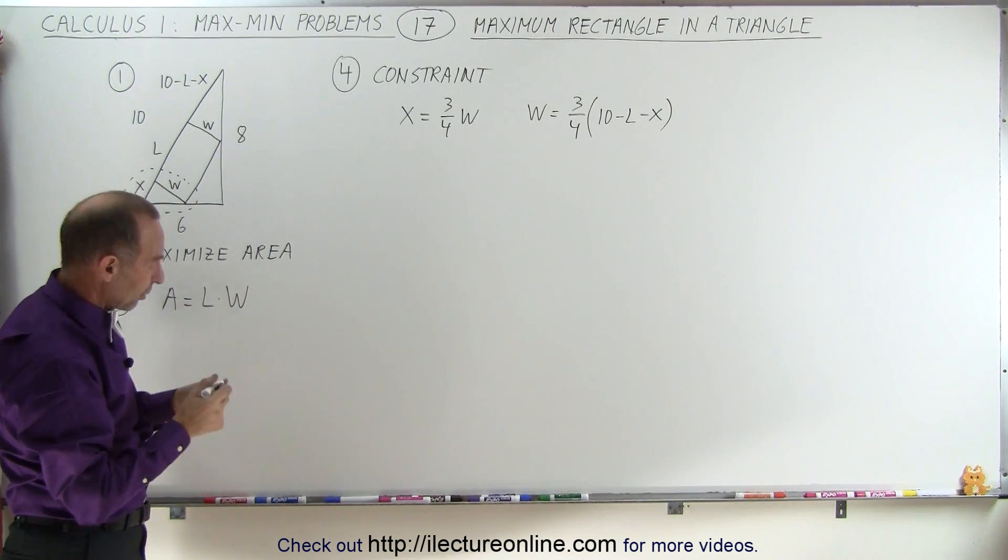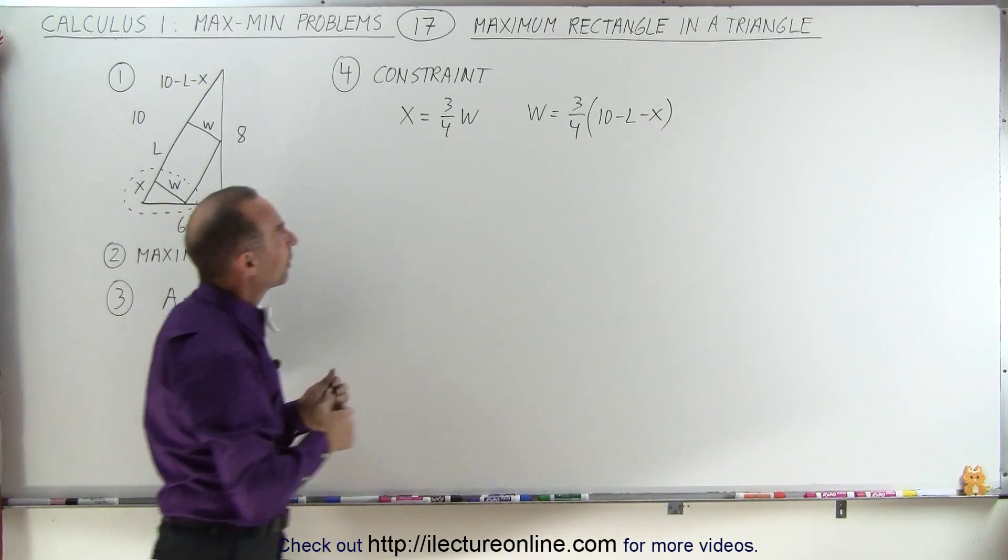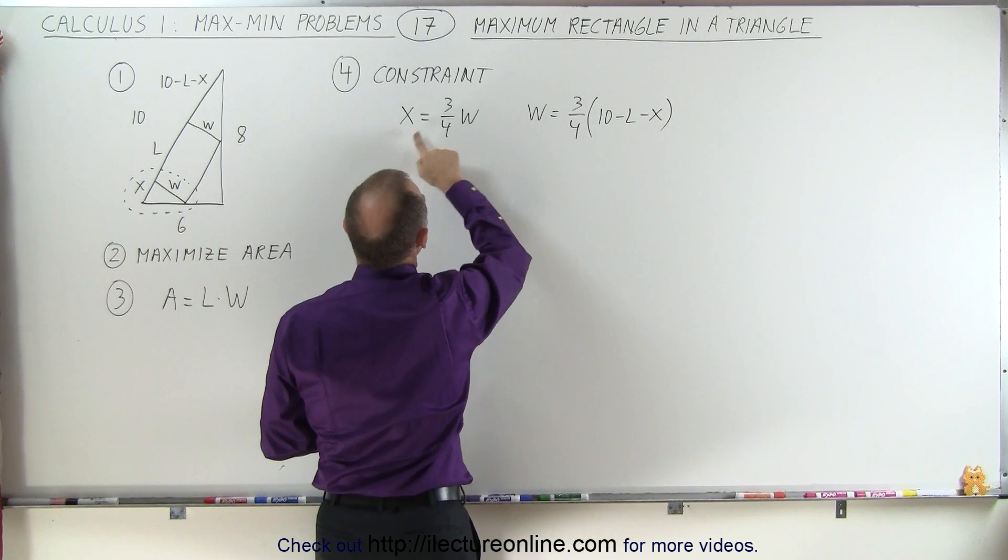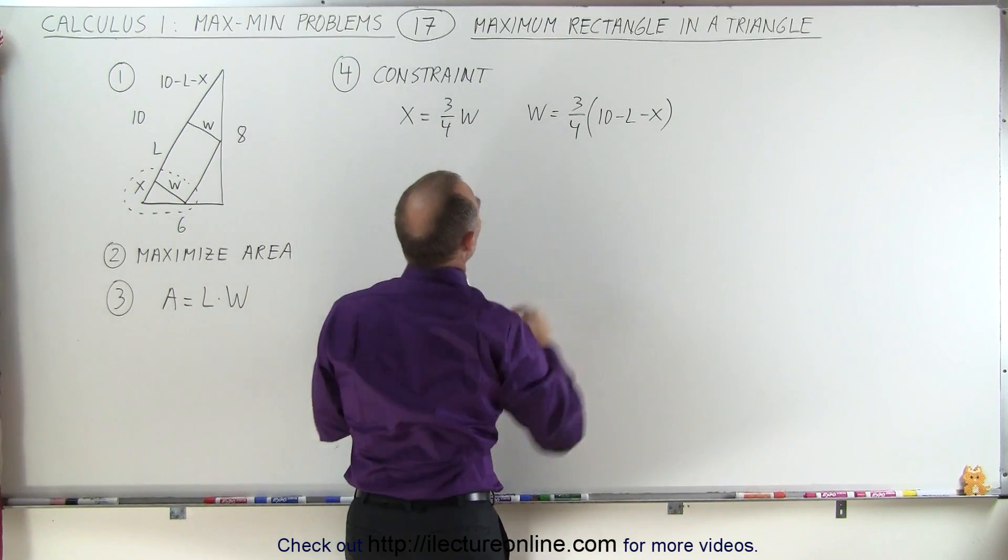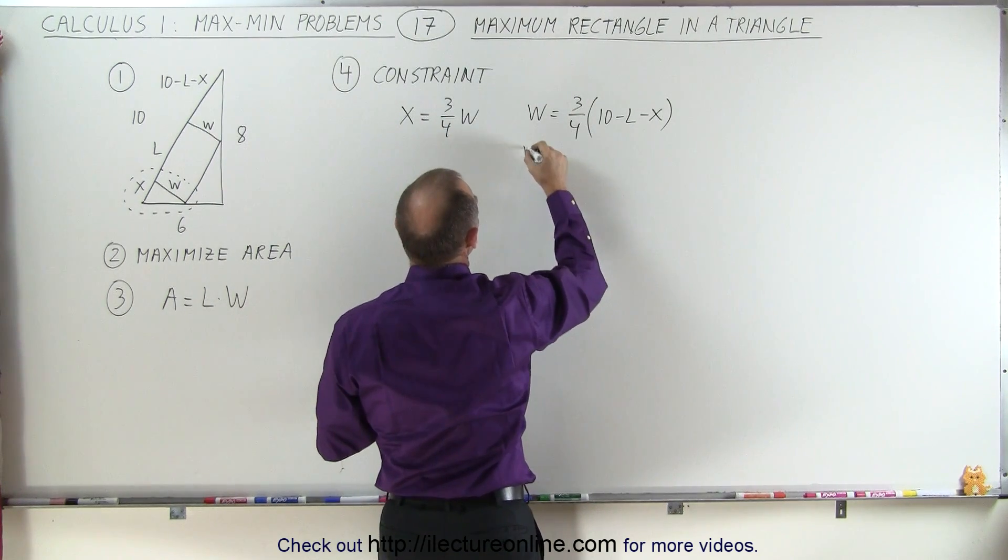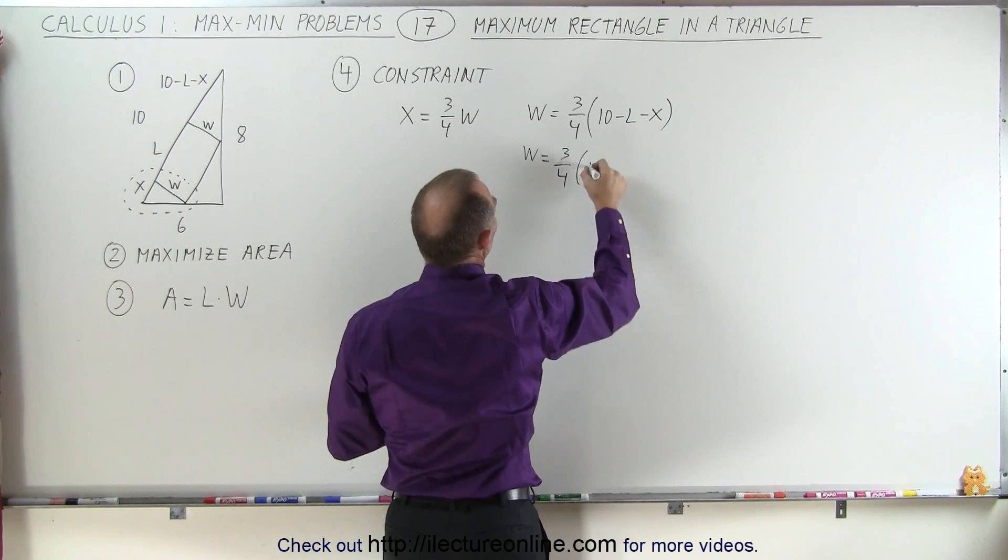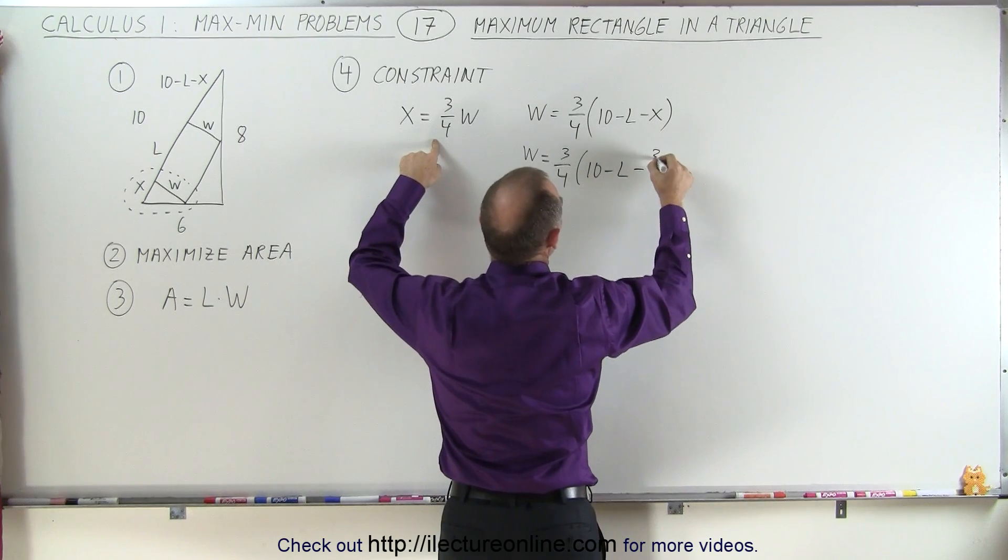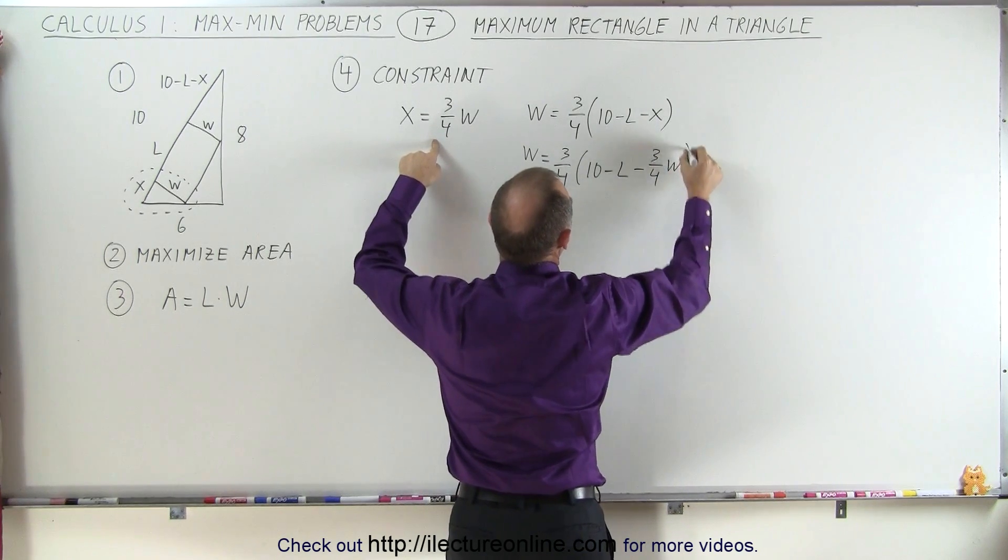And since X can be written as 3 quarters W, that can go in here. So W is equal to 3 quarters times 10 minus L minus X, which is 3 quarters W.